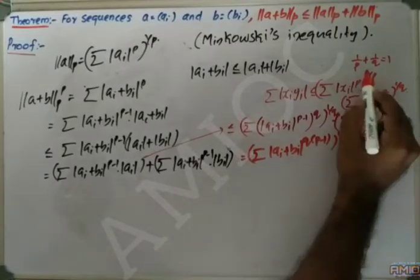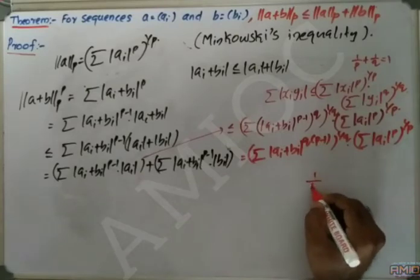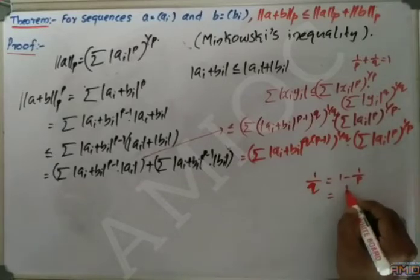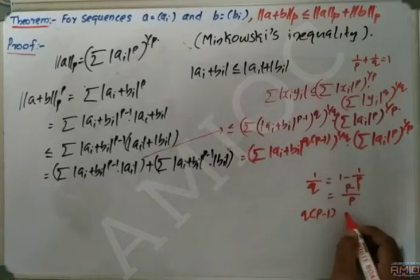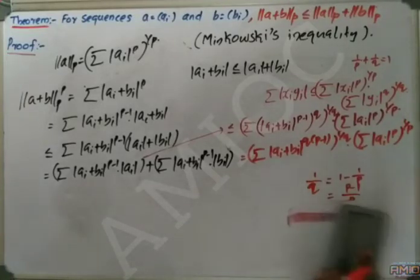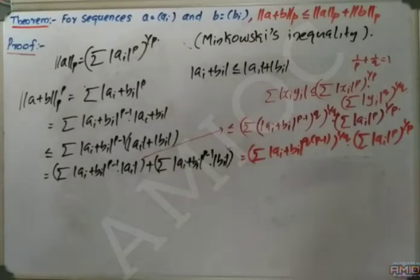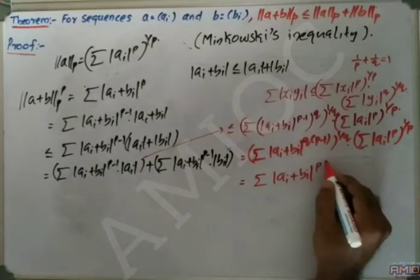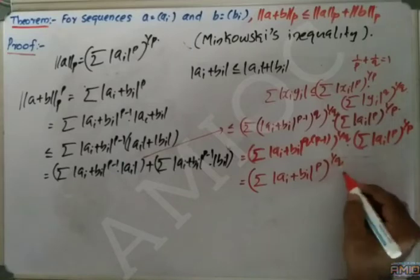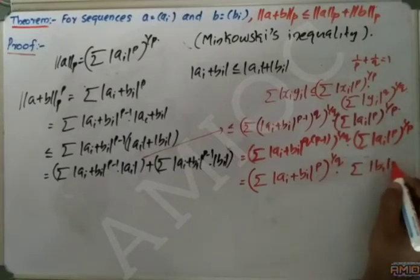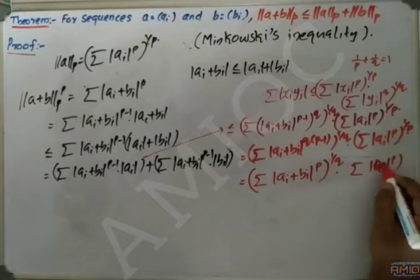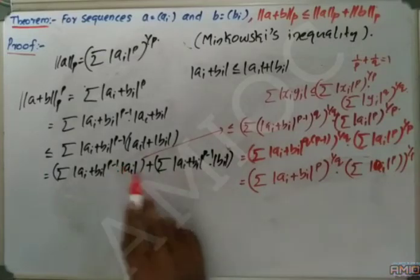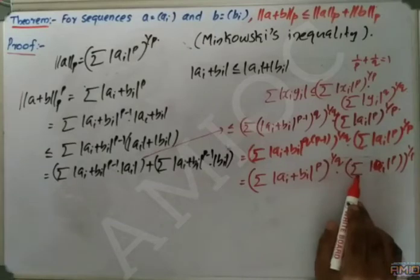Now, what is q·(p−1)? We have 1/p + 1/q = 1, so 1/q = 1 − 1/p = (p−1)/p, which gives q·(p−1) = p. So q·(p−1) can be replaced by p, meaning (Σ|a_i + b_i|^(q(p-1)))^(1/q) becomes (Σ|a_i + b_i|^p)^(1/q).